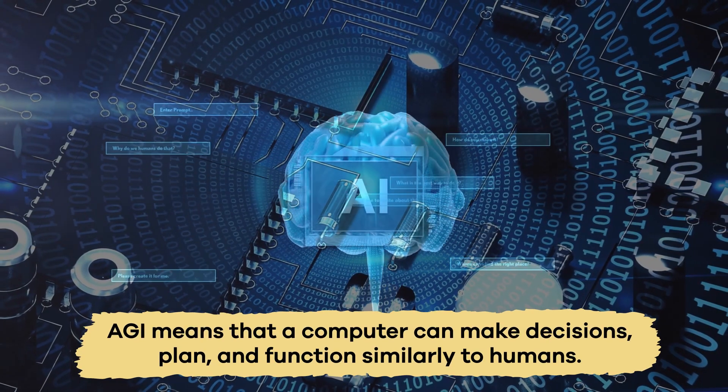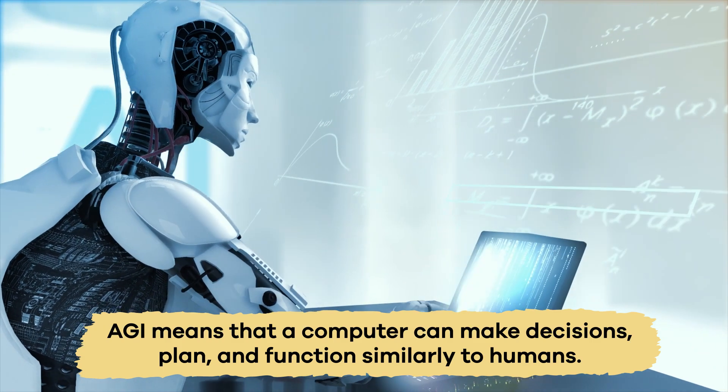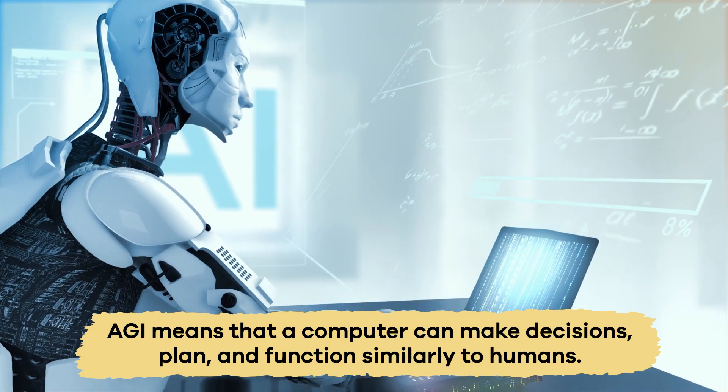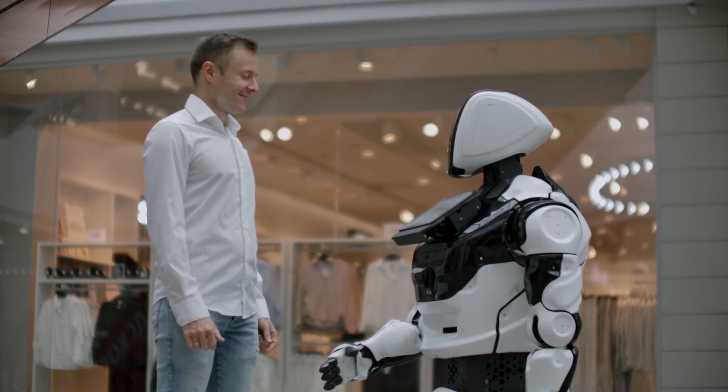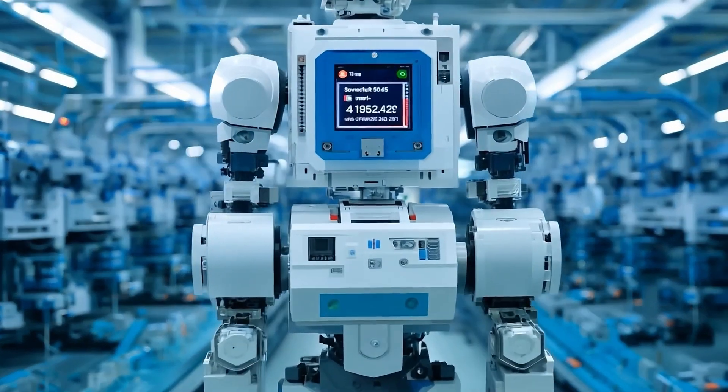AGI means that a computer can make decisions, plan, and function similarly to humans. Many experts think that is the direction that AI is currently headed, but it isn't there yet.